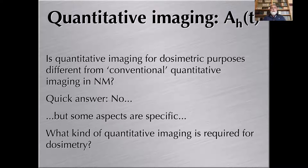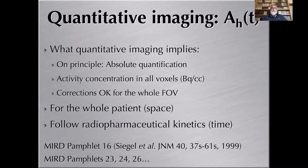The first question we have to ask is: is quantitative imaging for dosimetry different from conventional quantitative imaging in nuclear medicine? Fortunately, the quick answer is no, meaning that we can benefit from the knowledge of quantitative imaging for scintigraphic imaging. But some aspects are specific. For dosimetry, what we want is absolute quantification. We want to have activity concentration in all voxels that make the image — we want to get Becquerel per CC.